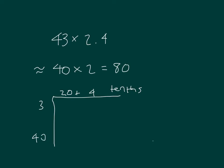And we'll figure out all of these partial products. So these rows represent 3 times 24 tenths and 40 times 24 tenths. 3 times 20 is 60. 3 times 4 is 12. 40 times 20 is 800.